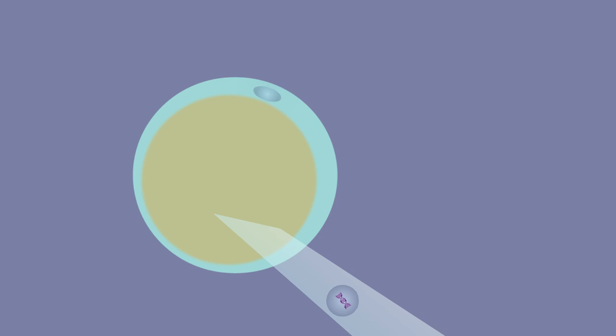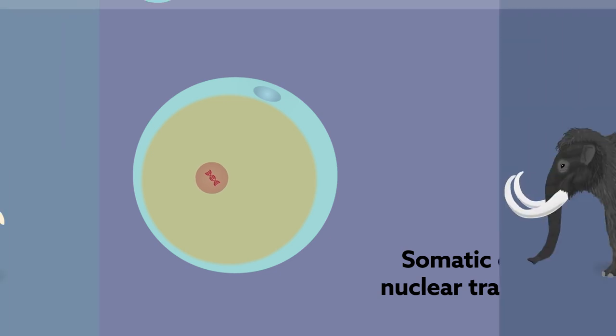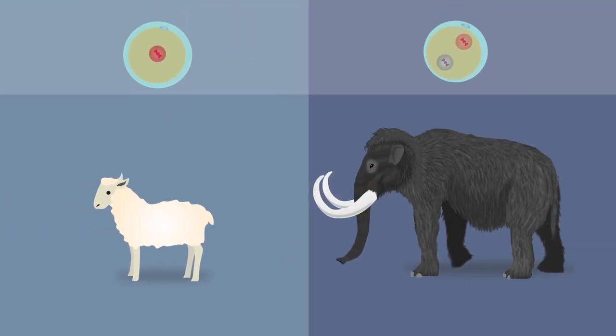They then transplanted them into mouse-egg cells. This process, called somatic cell nuclear transfer, is the same one used to clone animals like Dolly the sheep.